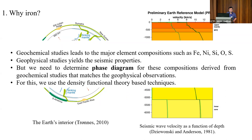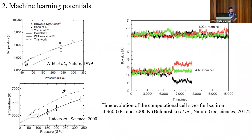It is very hard to perform diamond anvil cell experiments combined with X-ray diffraction at Earth's inner core conditions, and a lot of experimental data are not very consistent with each other. The last two decades have seen great advancement in what we call computational mineral physics, which is a subject that focuses on the physical properties of minerals relevant to Earth's interior.